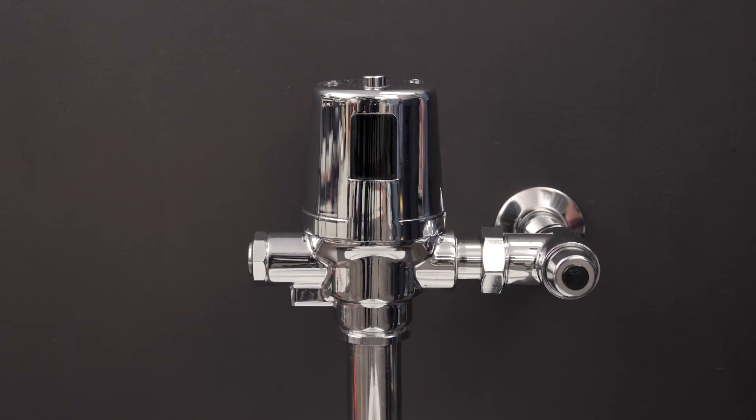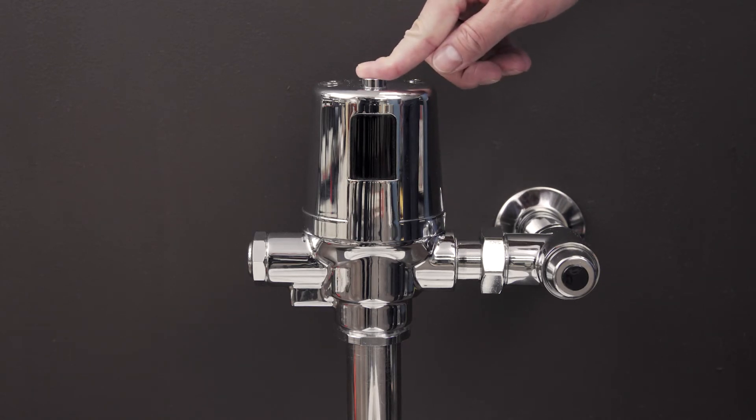Water flow rate is dependent on the pressure. So the pipe size, length, and the number of fixtures in the building can all affect the flow rate of each flush.